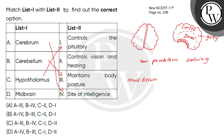The Midbrain controls vision and hearing. It has four lobes called the corpora quadrigemina. So midbrain controlling vision and hearing is the correct match.